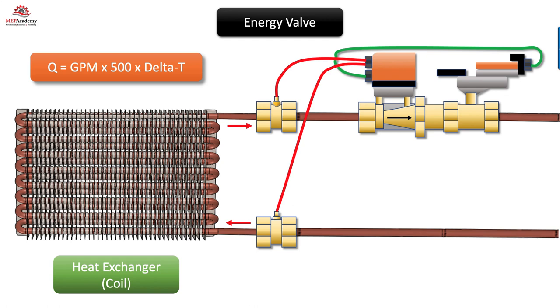To adjust the flow, or GPM, the energy valve will modulate the actuator on the control valve. The GPM is adjusted to reach the delta T set point of the energy valve.